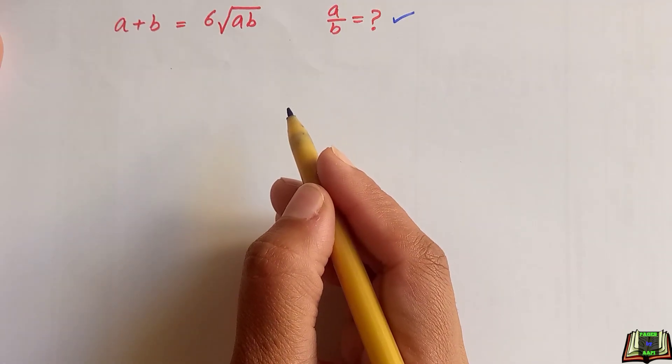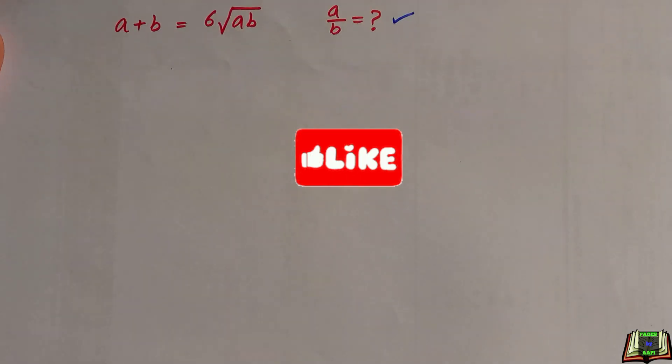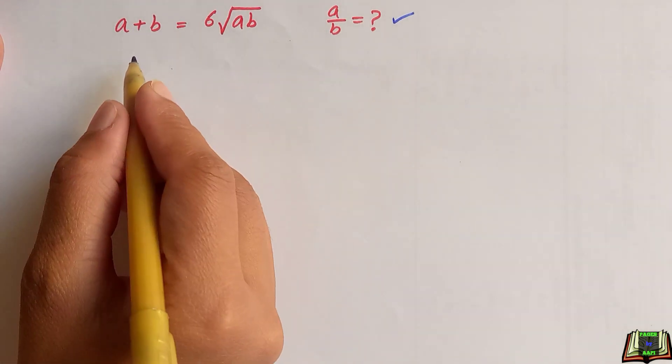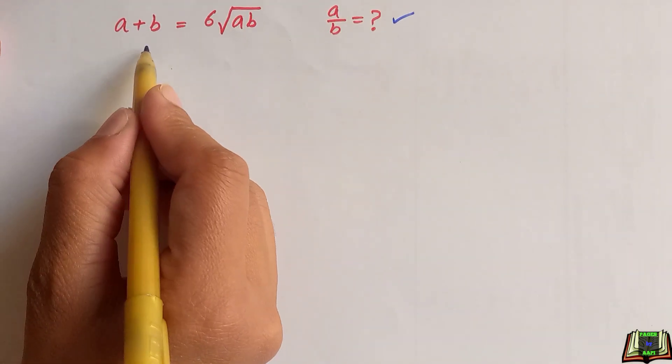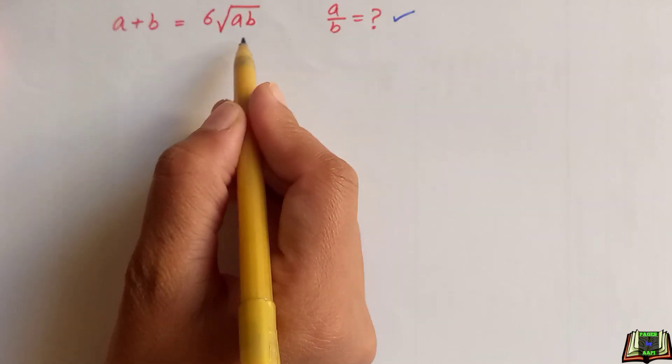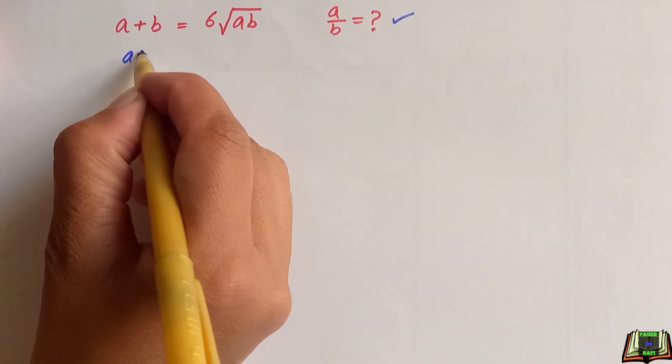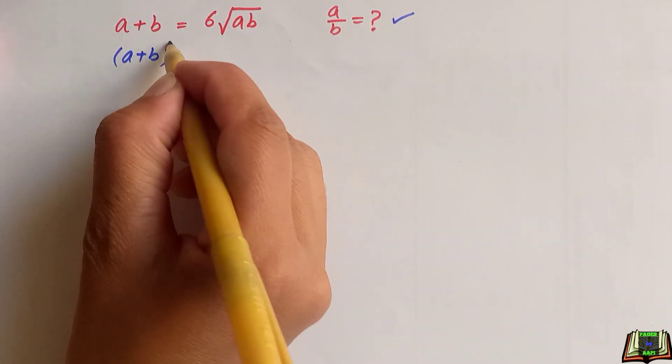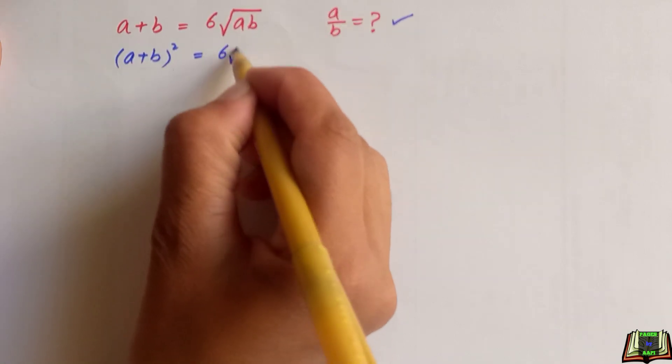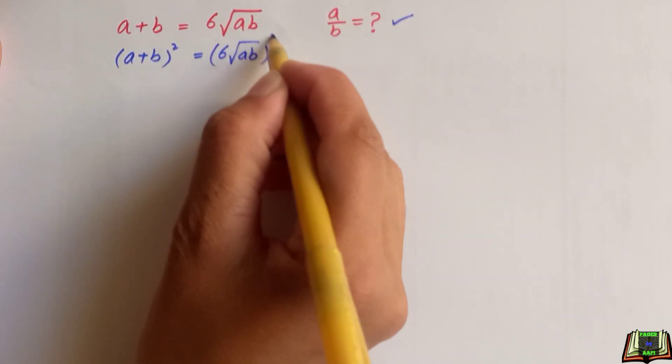So let's get started and see how we can solve it. As this is given here, a plus b is equal to 6 root ab. We are going to take square of this equation on both sides. a plus b whole square is equal to 6 root ab whole square.